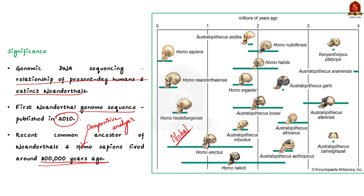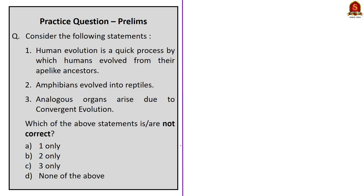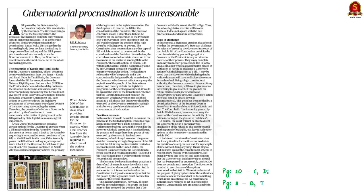The first Neanderthal genome sequence was published in the year 2010, and comparative analysis demonstrated that the most recent common ancestor of Neanderthals and Homo sapiens lived around 800,000 years ago. Thus, Pääbo's discoveries have generated new understanding of our evolutionary history, and for this groundbreaking discovery he was awarded the Nobel Prize for Medicine. His new scientific discipline is paleogenomics.